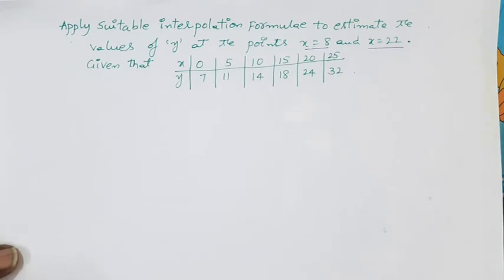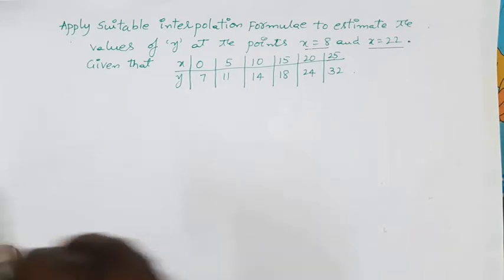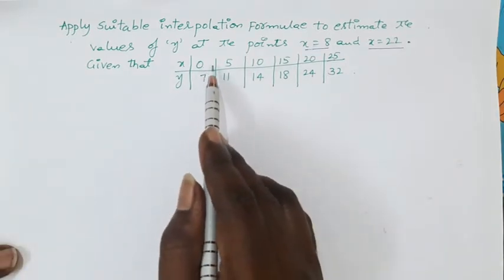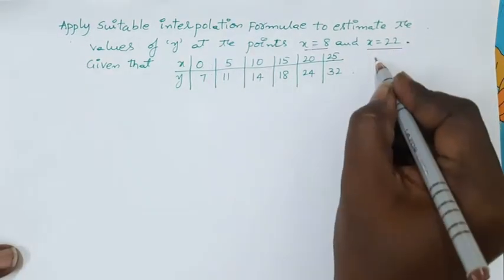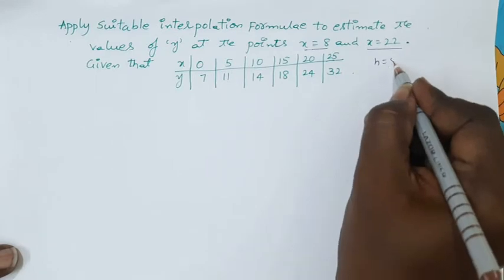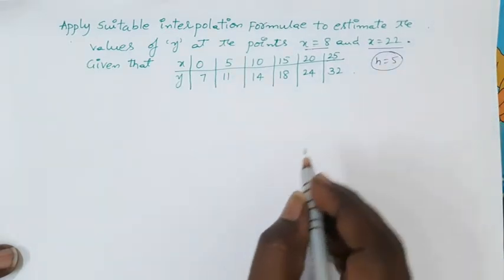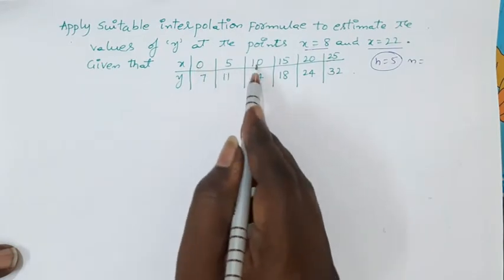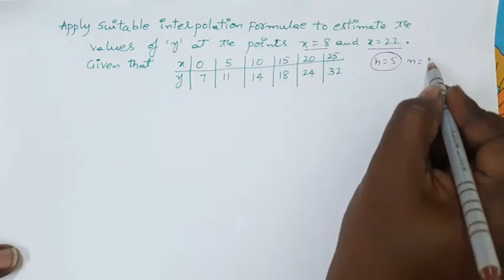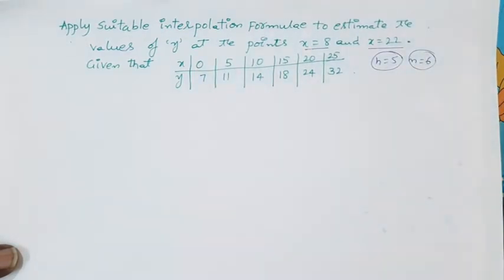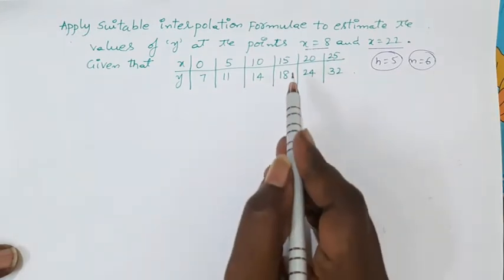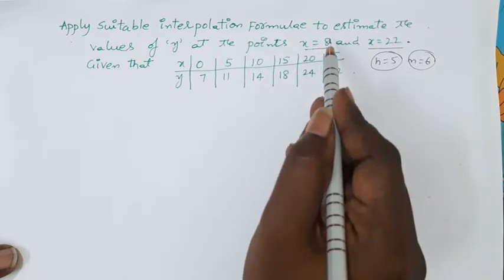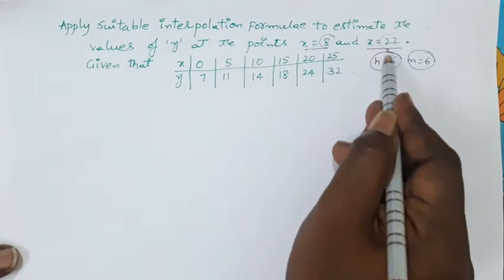We observe that the x values are separated by an equal difference of 5, so h is equal to 5. The number of given data points n is equal to 6, so up to fifth order differences exist in the difference table. We are going to find the y values at both points x equal to 8 and x equal to 22.